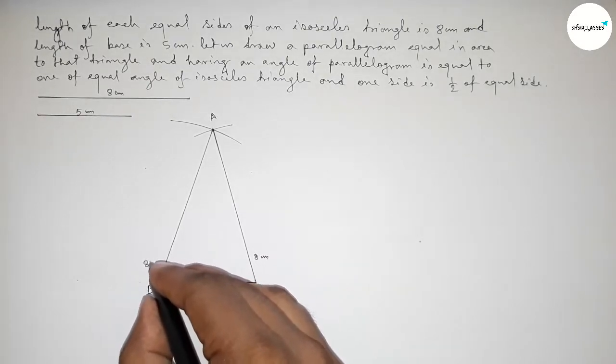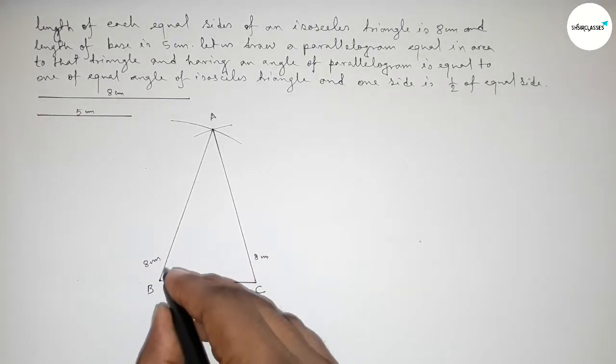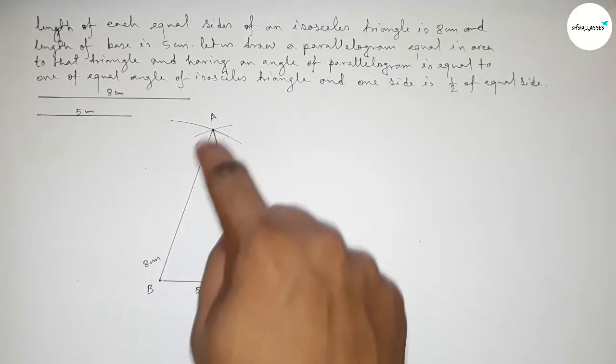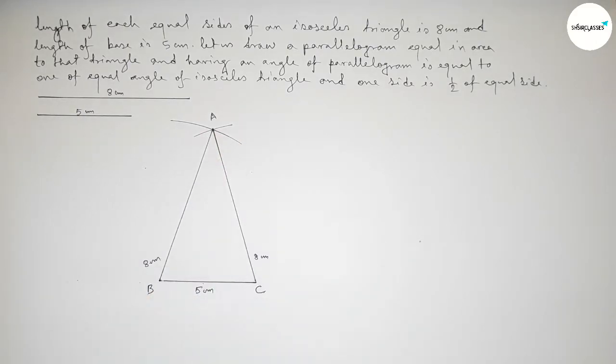So the base BC is 5 centimeters, side AB is 8 centimeters, and side AC is also 8 centimeters. The two base angles — angle B and angle C — are equal. Now we need to bisect line AB.